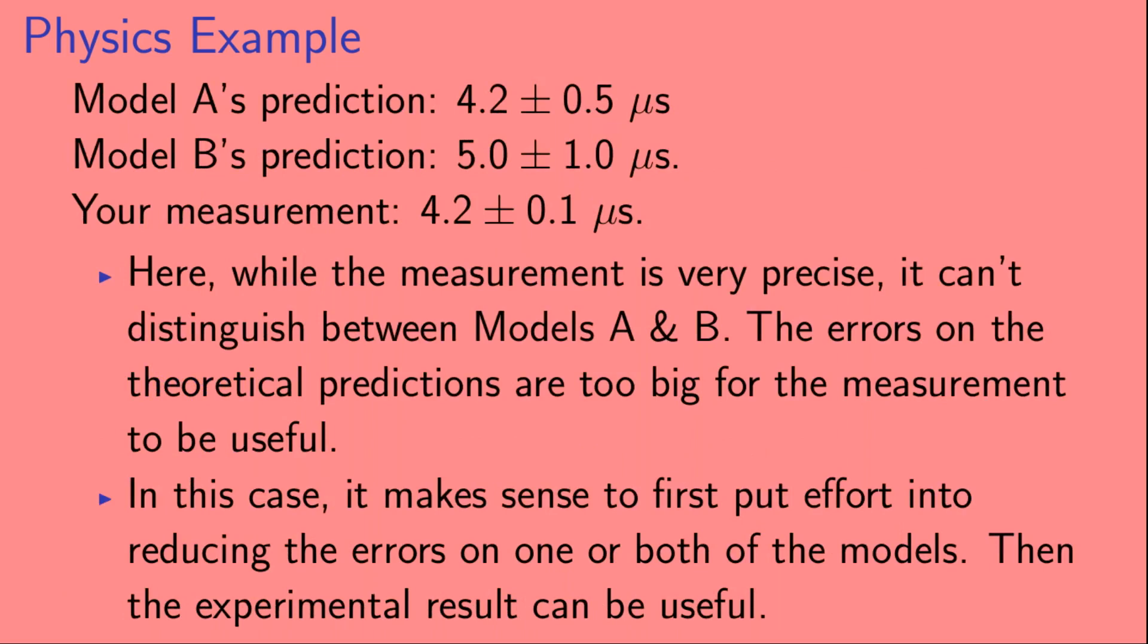So in this case, while the measurement is very precise, it can't distinguish between Models A and B. The errors on the theoretical predictions are too big for the measurement to be useful. In this case, it makes sense to first put effort into reducing the errors on one or both of the models. Then the experimental result can be useful.